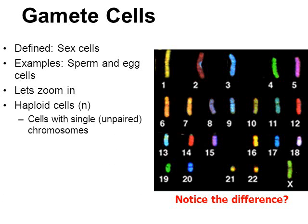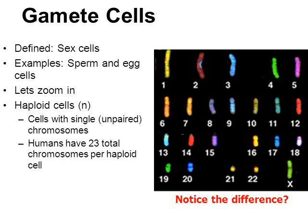Haploid cells are cells such as sperm and egg. Haploid cells are gametes. Haploid cells have a single set of chromosomes — there's only one chromosome number one, only one chromosome 15, only one chromosome 17. The chromosomes are not paired as they were in the diploid example. In humans, the haploid chromosome number is 23. That means in a female egg cell there are only 23 chromosomes, and in a male sperm cell there are only 23 chromosomes.